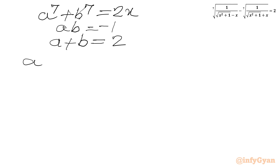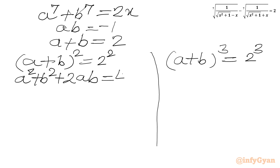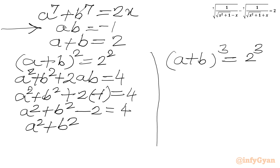Now I will consider squaring the equation a + b = 2. So (a + b)² = 4. Using the identity: a² + b² + 2ab = 4. Now ab = −1, so a² + b² + 2(−1) = 4, which gives a² + b² − 2 = 4. Adding 2 to both sides, we get a² + b² = 6.